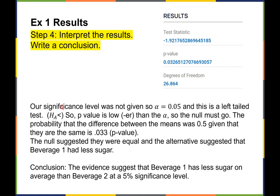The significance level was not given, so we choose alpha = 0.05. This is a left-tail test because the alternative hypothesis was less than. Our p-value of 0.0326 is lower than alpha — the p-value is low, so the null must go. The probability that the difference between the means was one-half, given that we assumed they were the same, is 0.033, which is less than 0.05. Our conclusion: the evidence suggests that Beverage 1 has less sugar on average than Beverage 2 at a 5% significance level.